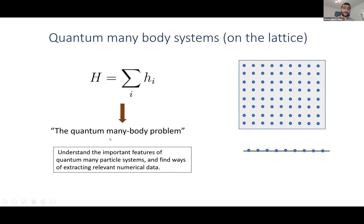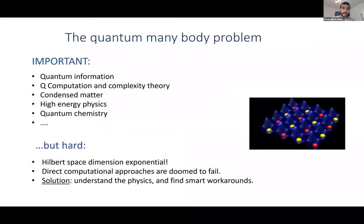This is of course a very physically important object, and understanding it is called the quantum many-body problem. It's a very big problem — not very clearly stated — but I'd summarize it as trying to understand the important features of these quantum many-particle systems and finding ways of extracting the relevant numerical data that you can use for experiments.